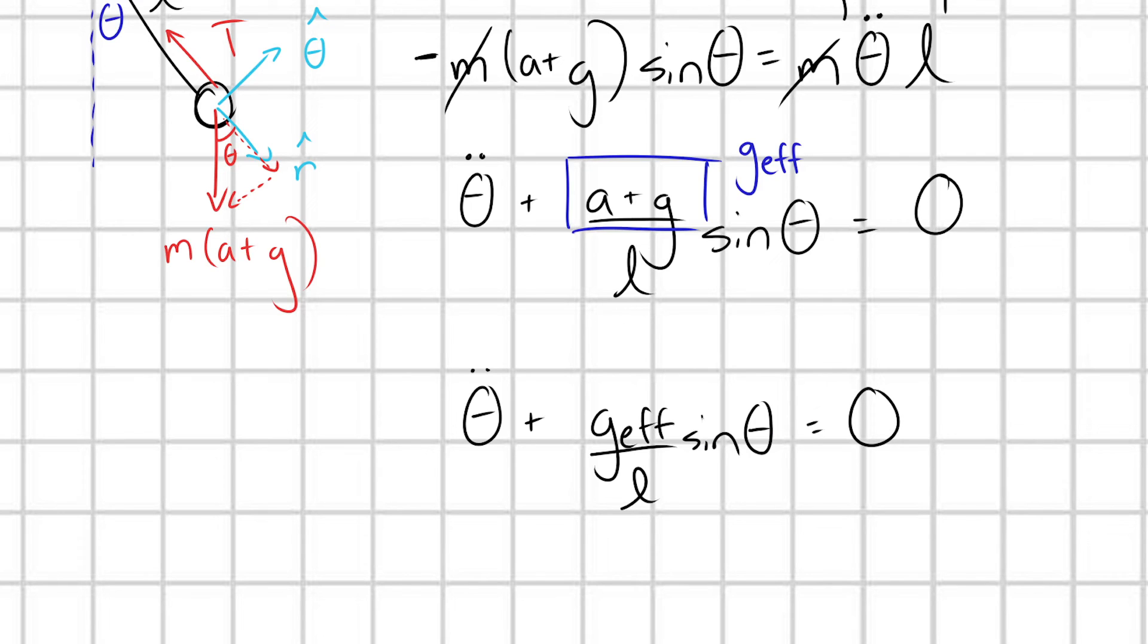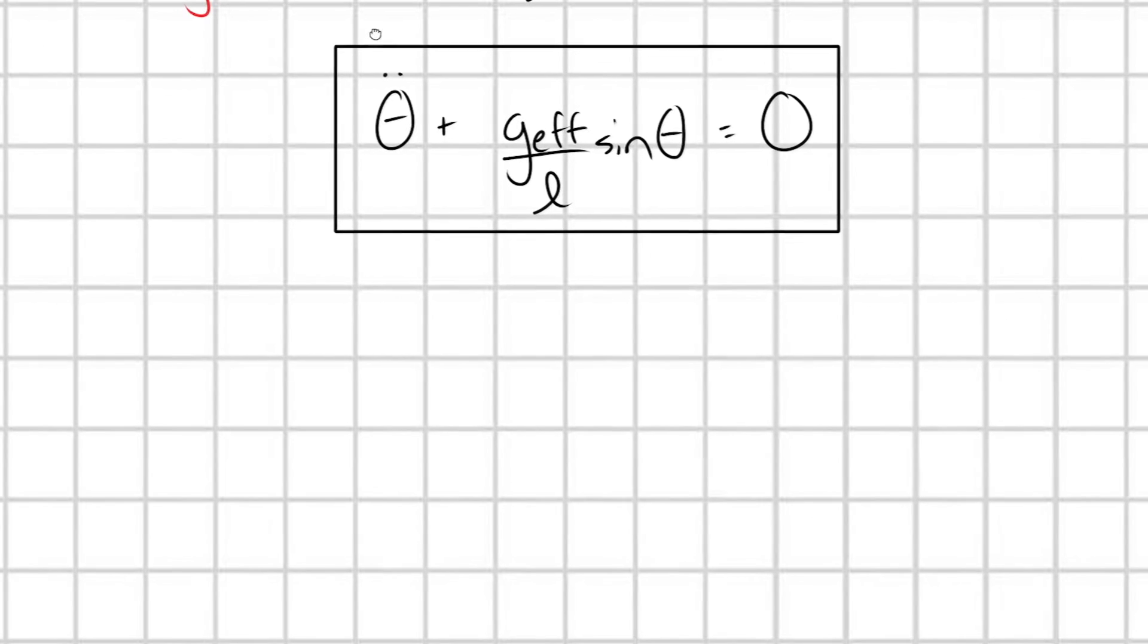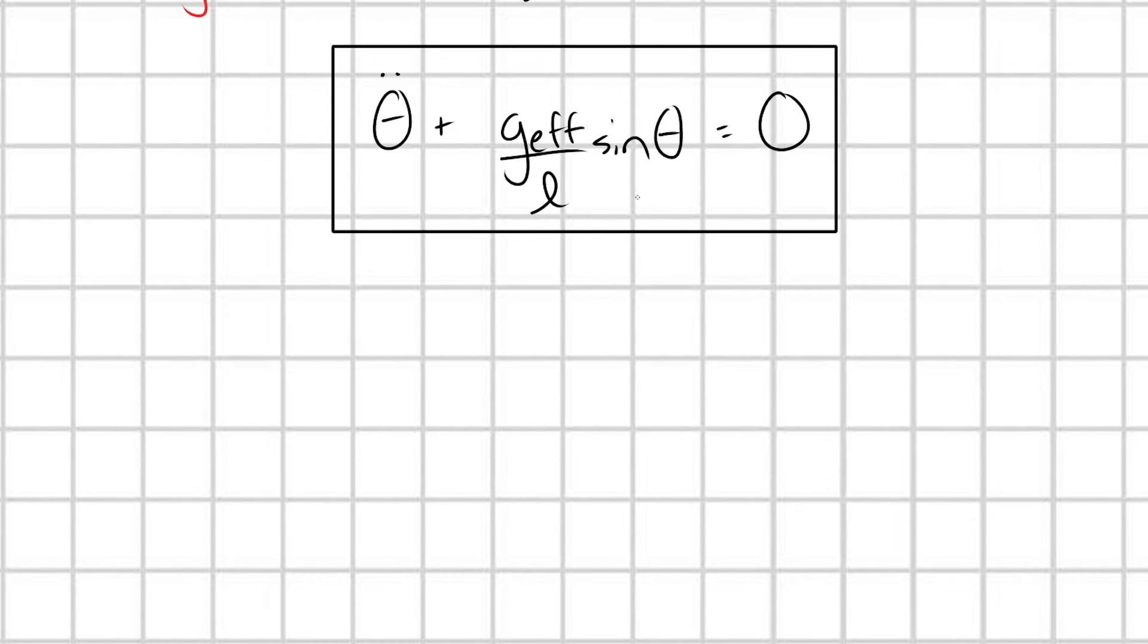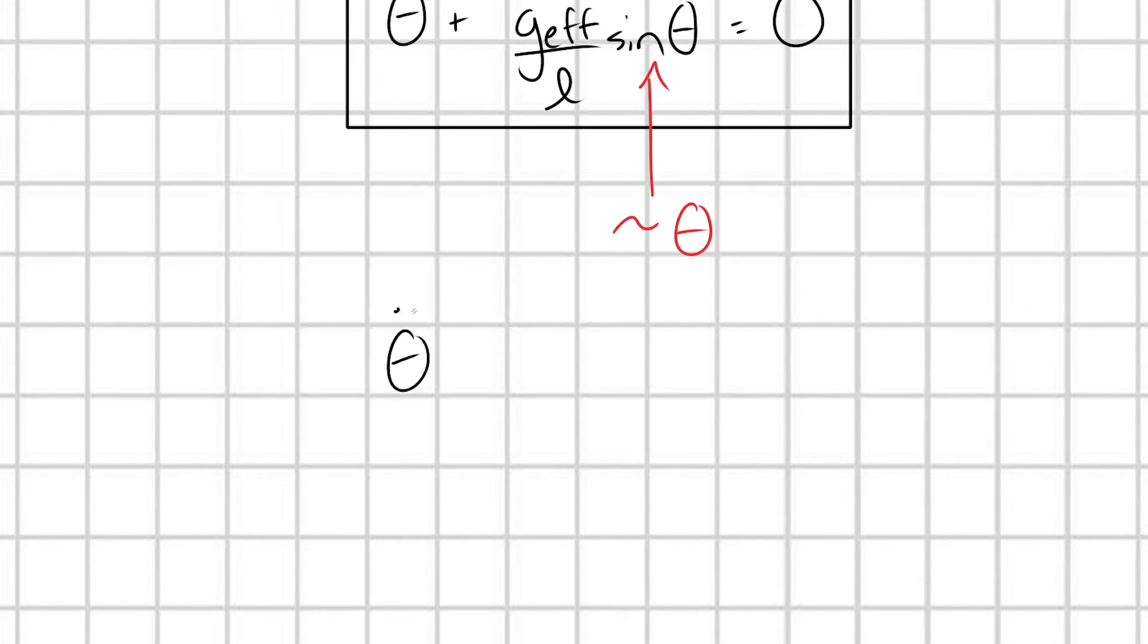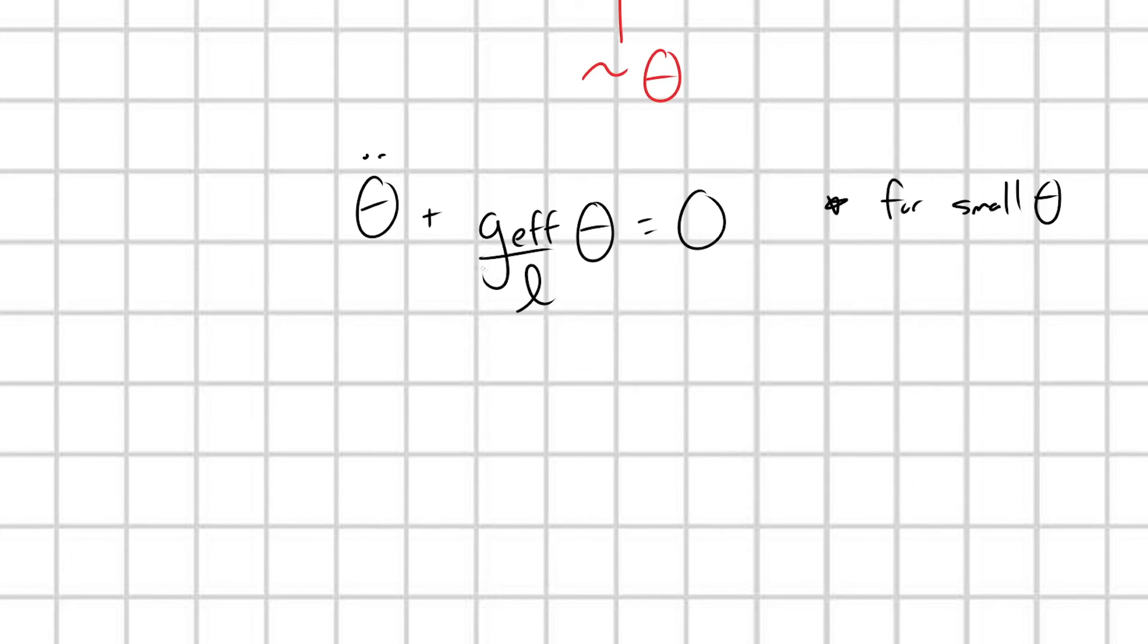And there we go, we have our equation of motion for this simple pendulum. And of course, if we wanted to, we could go through and we could say that for small angles theta, if theta is small, then this becomes approximately equal to theta. A sine theta Taylor expansion. The first term is going to be theta and we get theta double dot, plus G effective over L times theta equals zero for small theta.